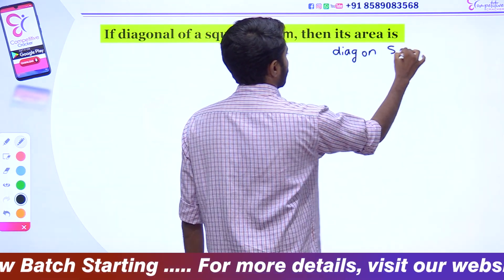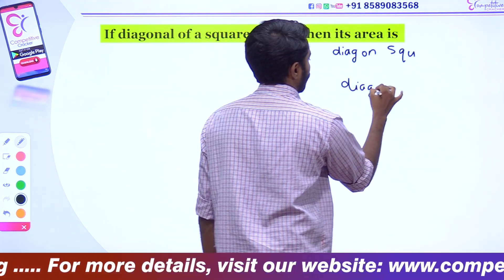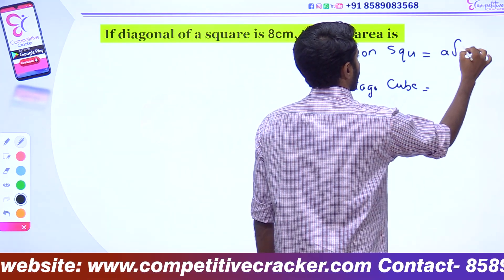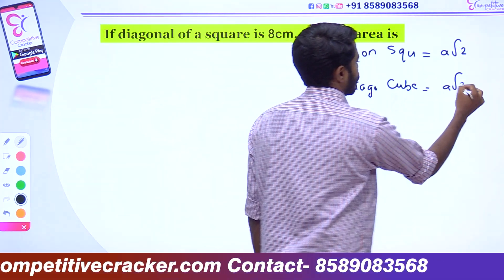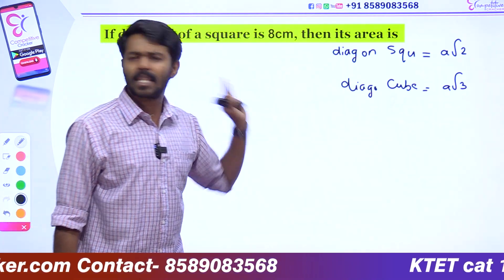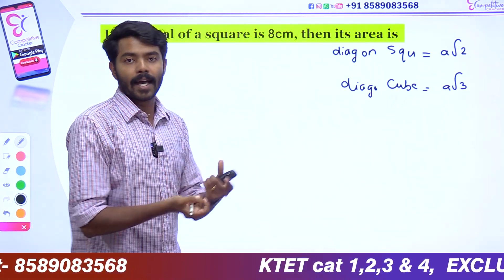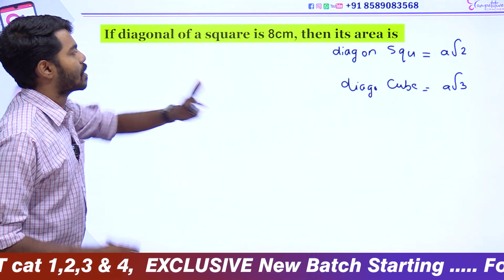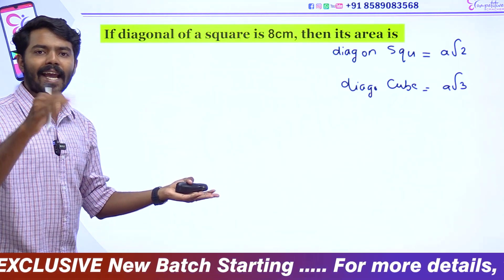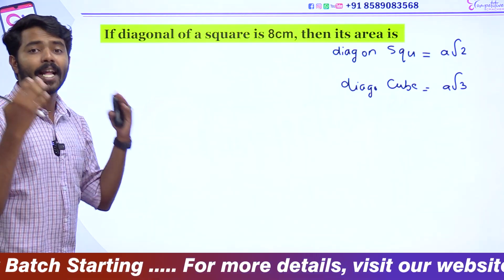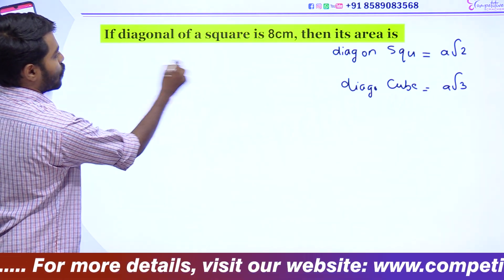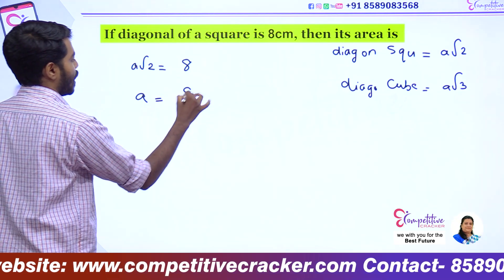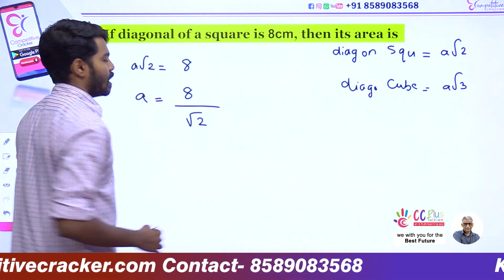Diagonal of a square. Then, diagonal of a cube. The diagonal of a square is A√2 and the diagonal of a cube is A√3, where A is the length of the side. The square's diagonal is 8 cm, and the area uses the formula A√2. So first, we have to find the value of A. Diagonal equals A√2, so A is equal to 8 divided by √2.